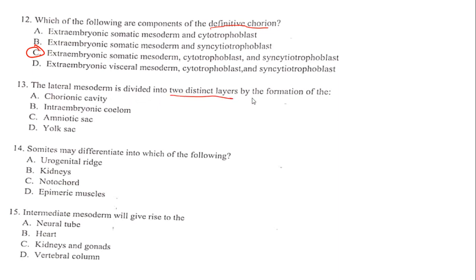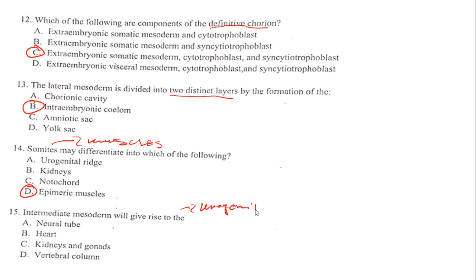The lateral mesoderm is divided into two distinct layers by the formation of the intra-embryonic coelom. The somatic layer plays a role in the formation of muscles. The intermediate mesoderm will give rise to the kidney, the urinary system, and the urogenital system — including the gonads. So the answer here is simply C.